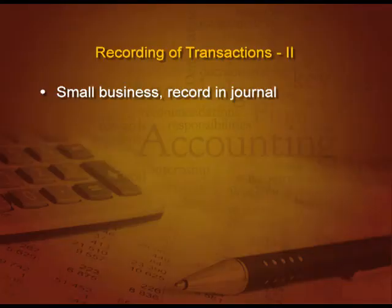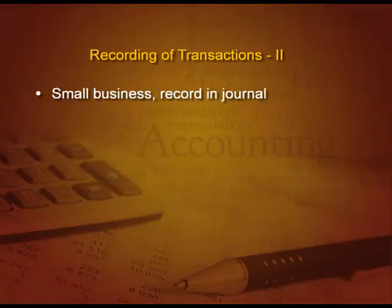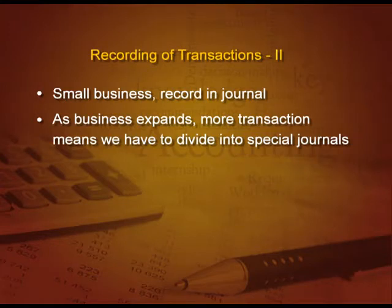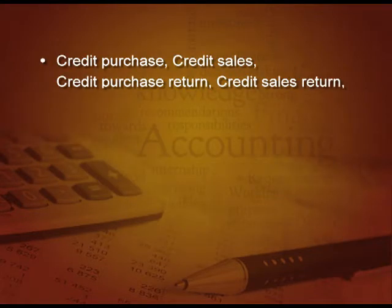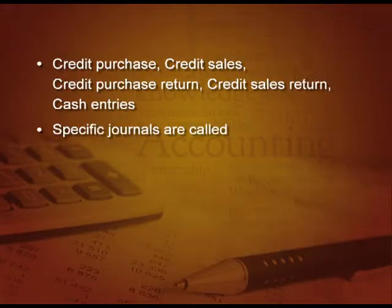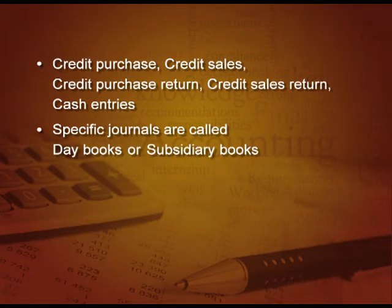When the business is very small, we record in journal. But as the business expands, more and more transactions mean we have to divide it into special journals, which means that specific transactions of a similar type are recorded in a separate journal — like credit purchase, credit sales, credit purchase return, credit sales return and cash entries. These are all recorded in their specific journals, which are also called day books or subsidiary books.